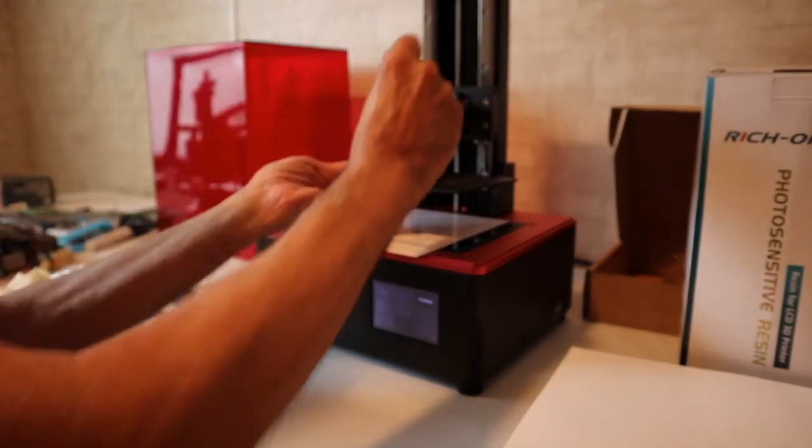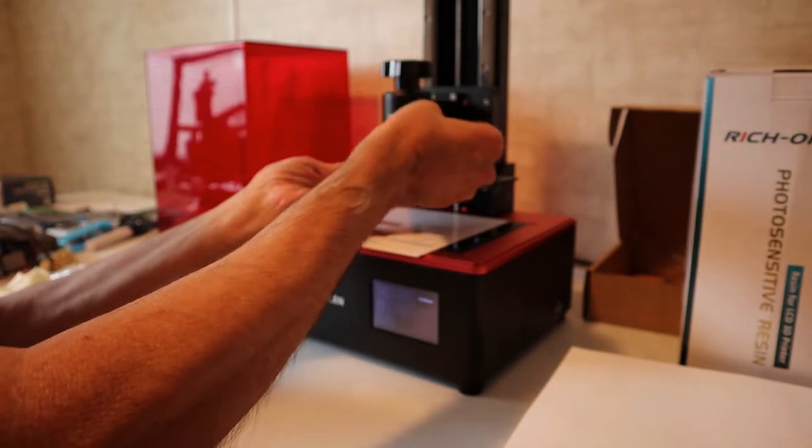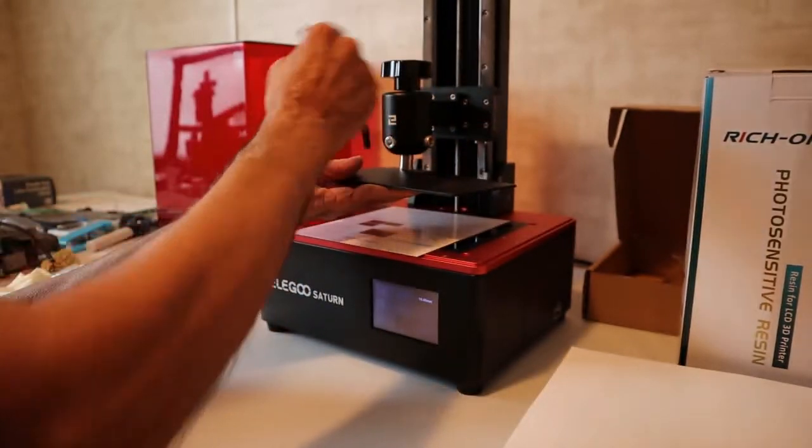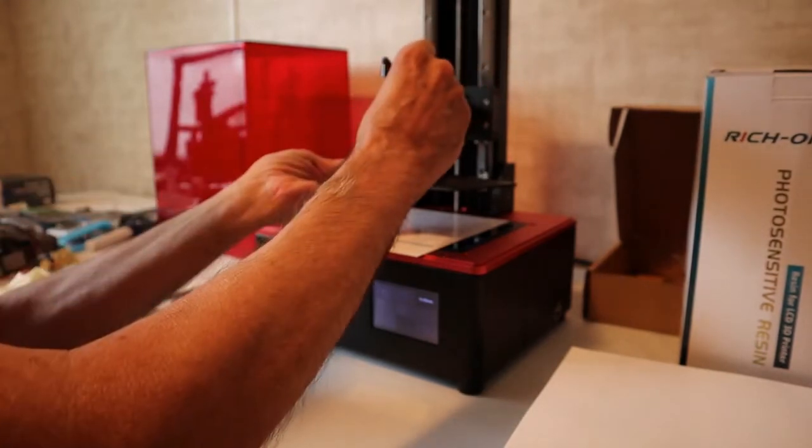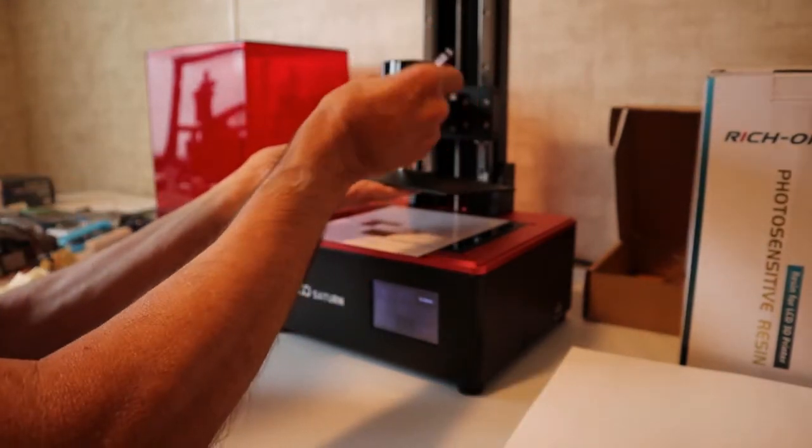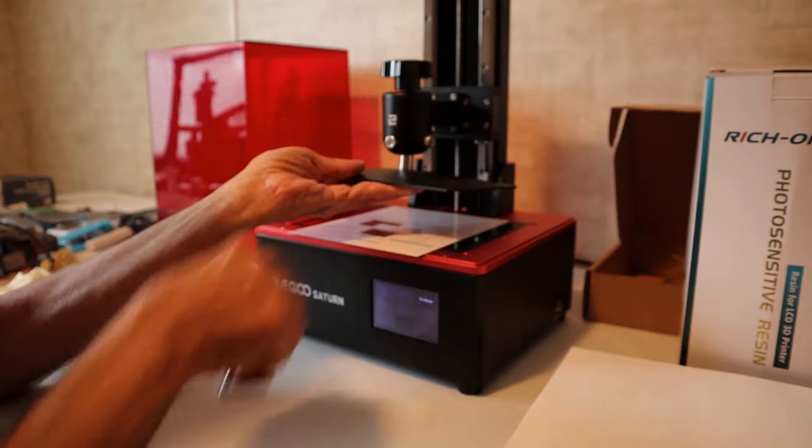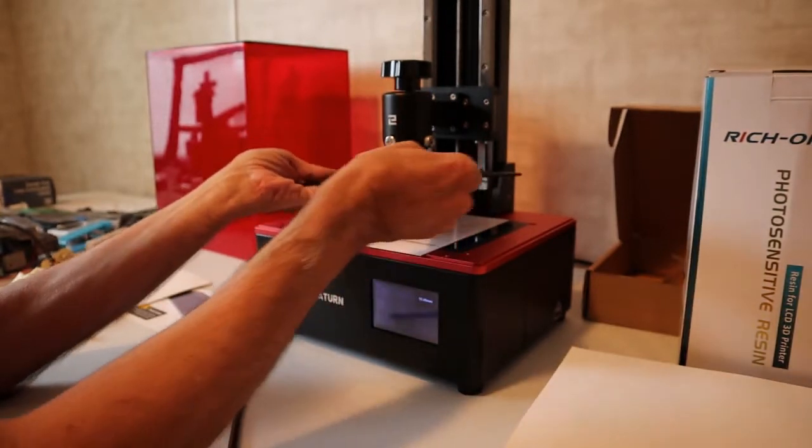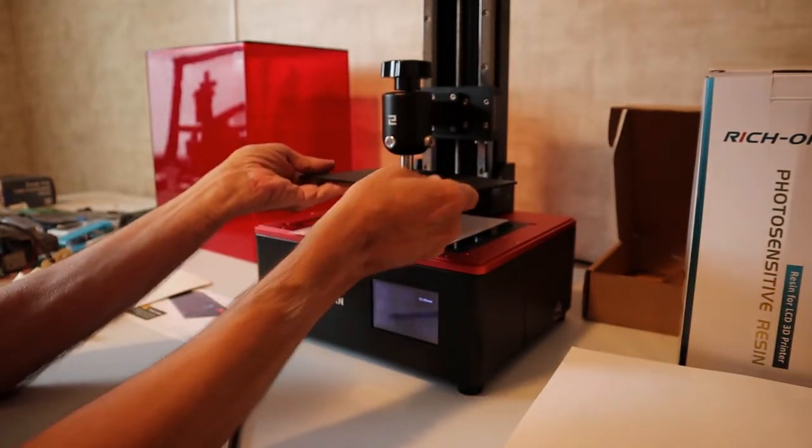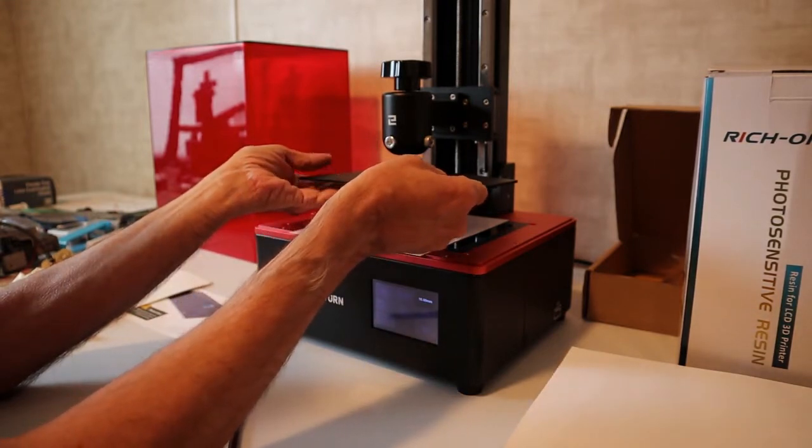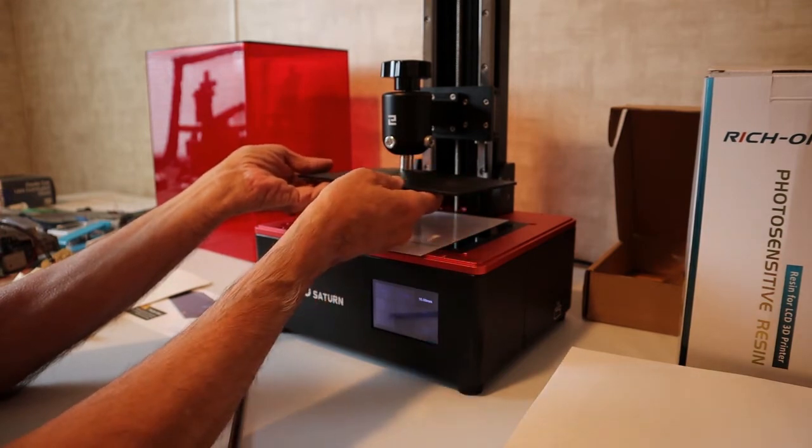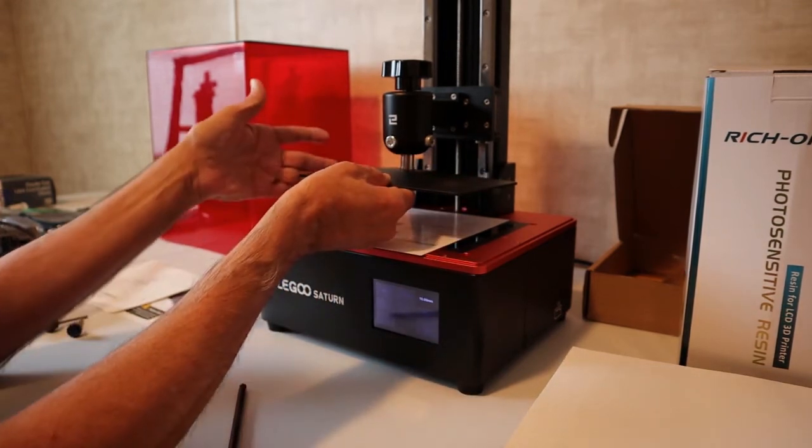So anyways, loosen the hardware. There we go, a little pop. Make sure it's nice and loose so that it's freewheeling here. And the problem is, this can move all around, so I can see why some people are having a problem with this kind of build plate mount.